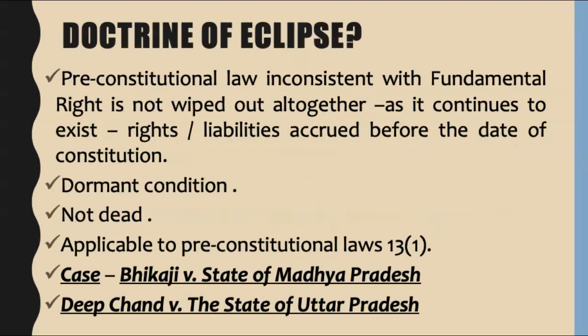Now let us understand the first doctrine and some of its basic cases. The doctrine of eclipse states that a pre-constitutional law inconsistent with a fundamental right is not wiped out altogether, as it continues to exist with respect to the rights and liabilities accrued before the date of the constitution.